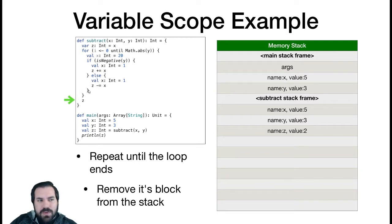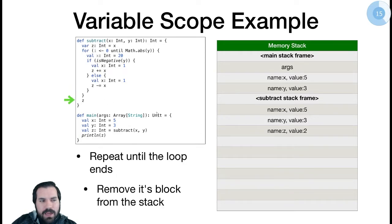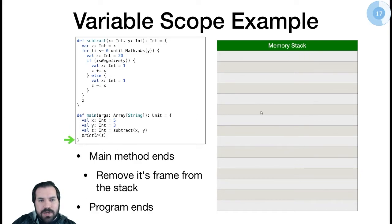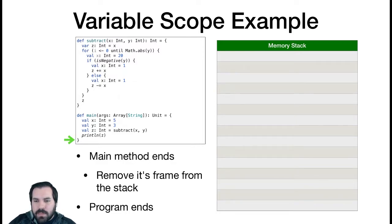Each time we hit a closing brace, we destroy stuff on the stack. We hit this closing brace: destroyed the else block. We hit this closing brace: destroyed the loop block. We hit this closing brace: destroyed the subtract stack frame. We hit this closing brace: destroyed the main stack frame. Everything put on the stack since the previous open brace is what gets destroyed — that's the concise way of putting it.